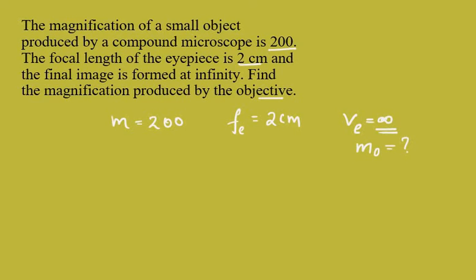For an eyepiece lens, when the final image is formed at infinity, the magnification formula is Me equals d by Fe, where d is the least distance of distinct vision and Fe is the focal length. So we can write d equals 25 cm.